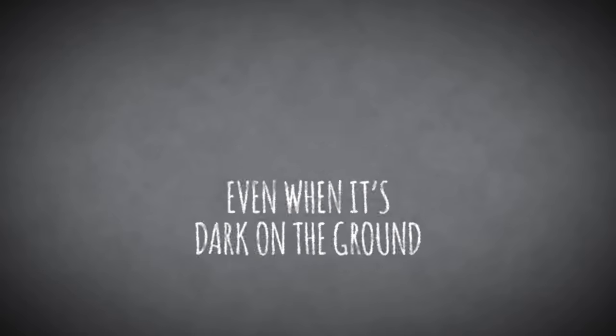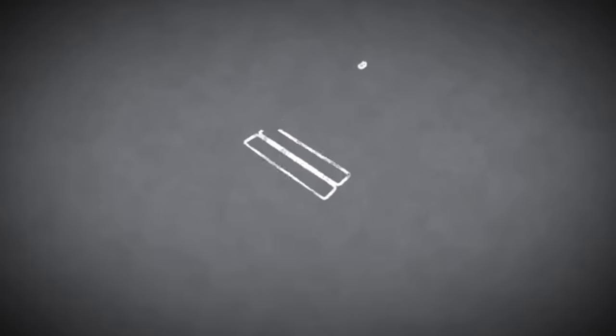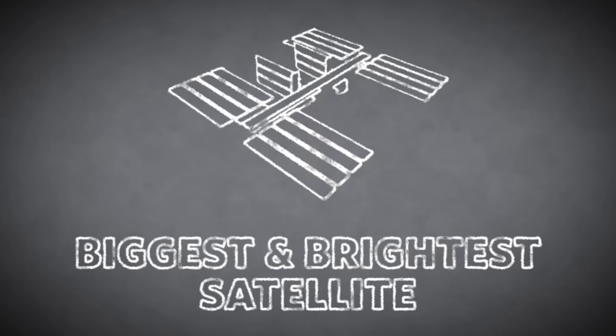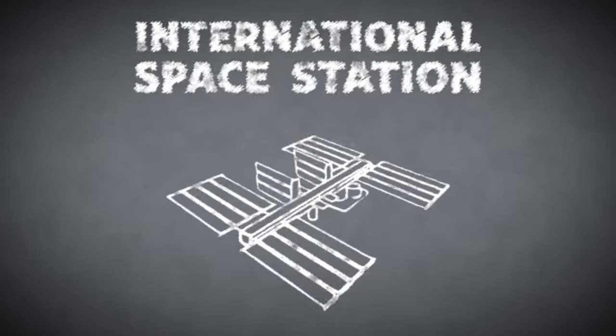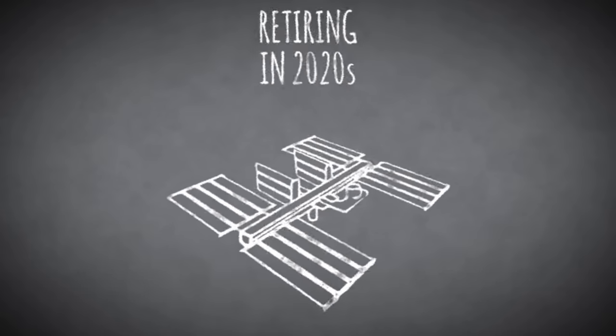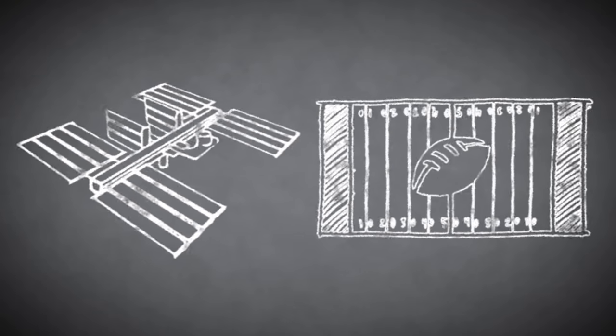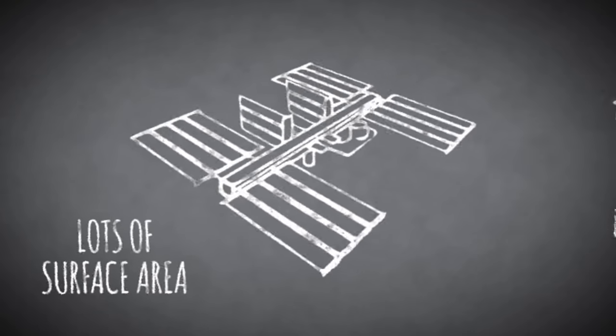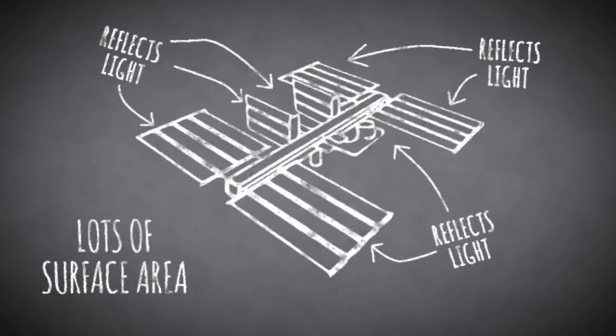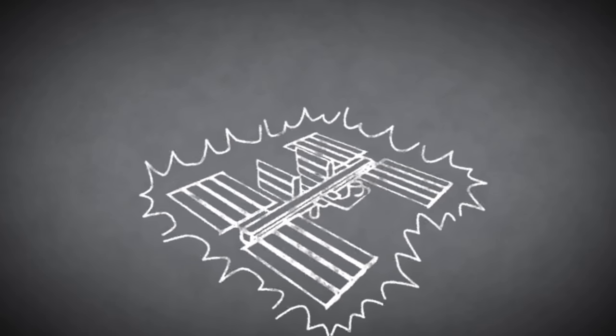These objects are visible only because they reflect the light of the sun. We see them only because they're high enough to catch the sun's light even when it's dark on the ground. The biggest and brightest satellite in operation is the International Space Station, which will remain in service until the 2020s.